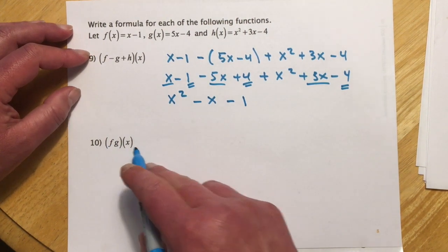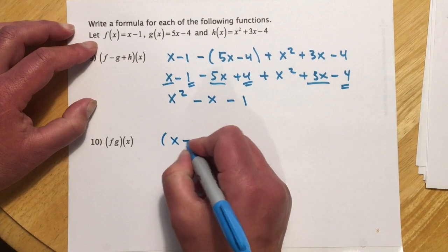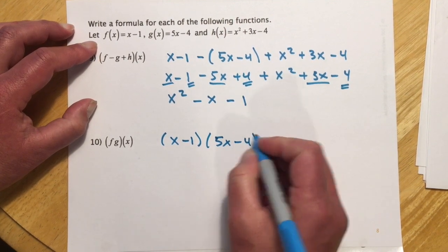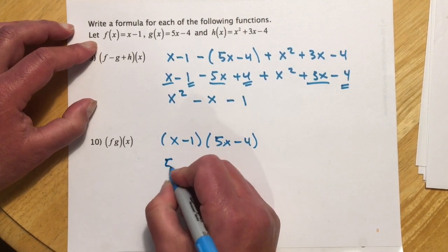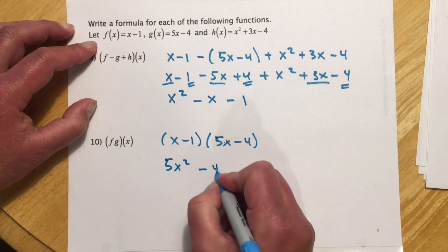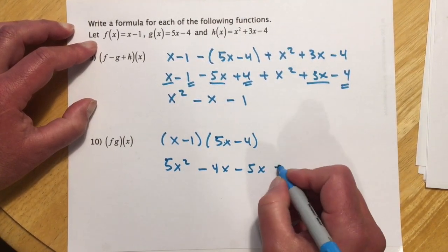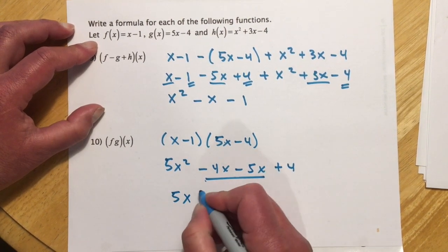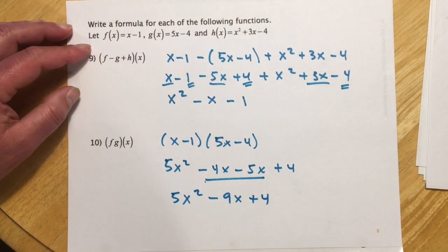f times g means to FOIL. So (x minus 1)(5x minus 4). First: 5x squared. Outside: minus 4x. Inside: minus 5x. Last: plus 4. Collecting like terms gives 5x squared minus 9x plus 4.